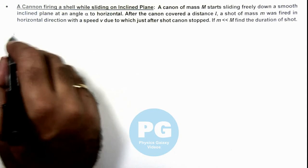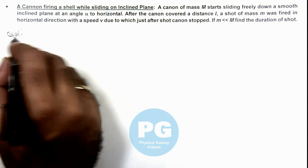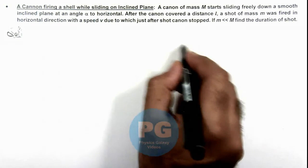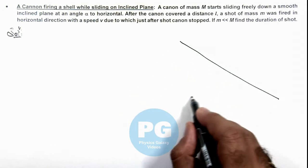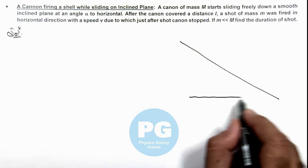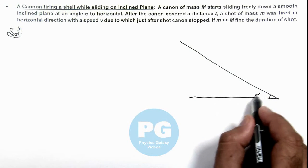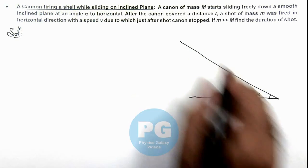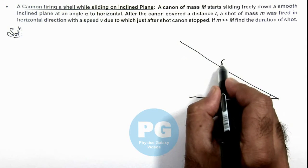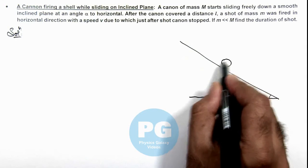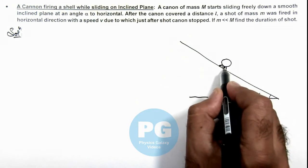We can draw the situation to understand it. This is the inclined plane of inclination alpha, and the cannon is sliding down with its barrel in the horizontal direction.